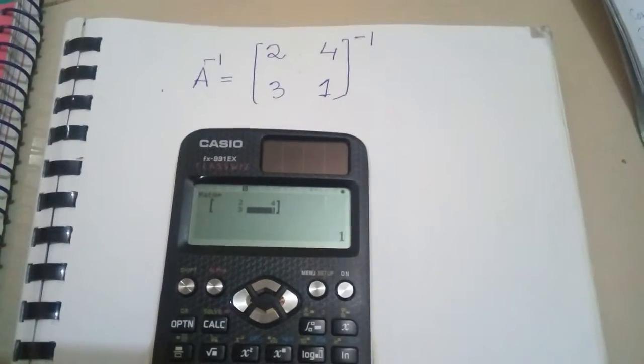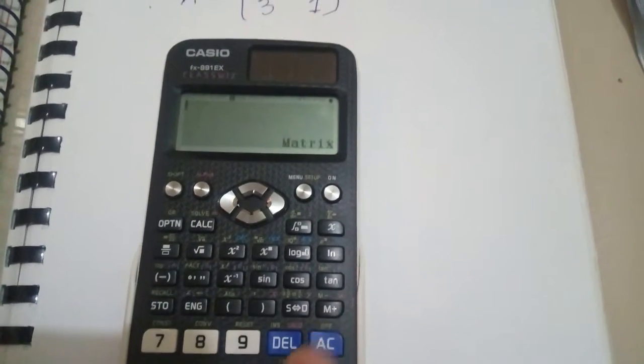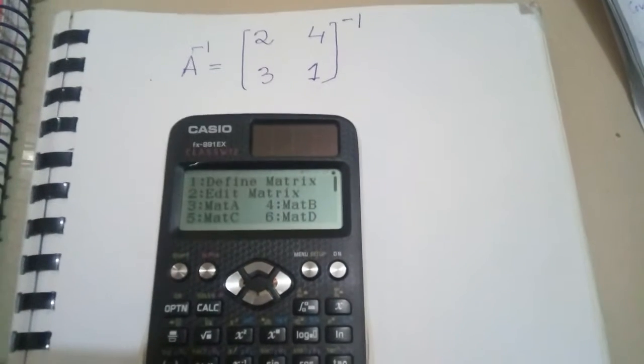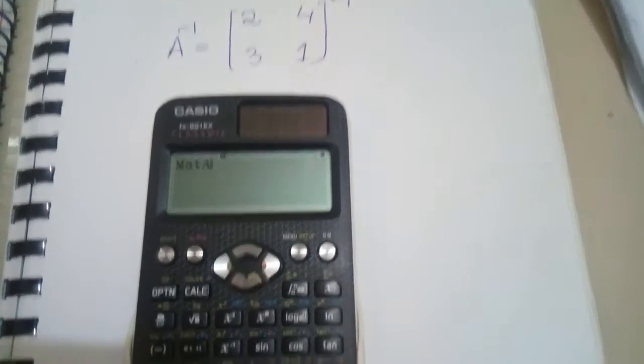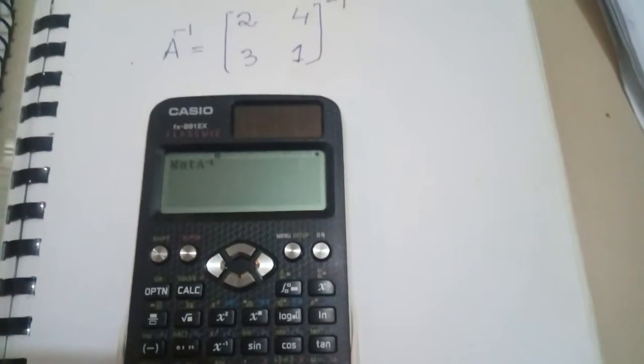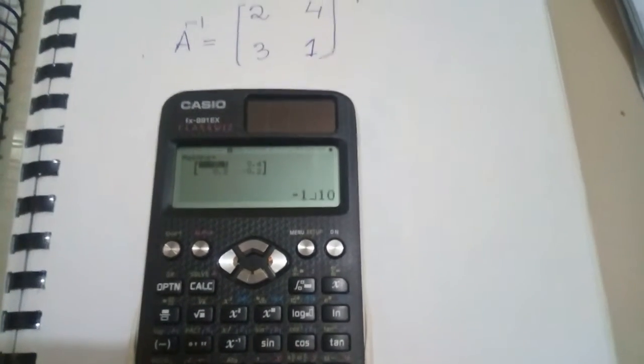Now press the AC button, then press option. Our matrix A is number 3, so press 3. After that, press the inverse button, then press the equals sign. This is the inverse of the matrix.